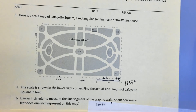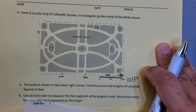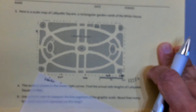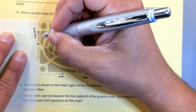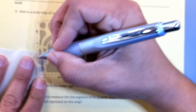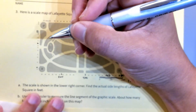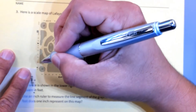Now we're going to do the width of the park, and I'm going to do it the same way. There's 200 feet, there's 200 feet — 200, 400 — and about 450 there.